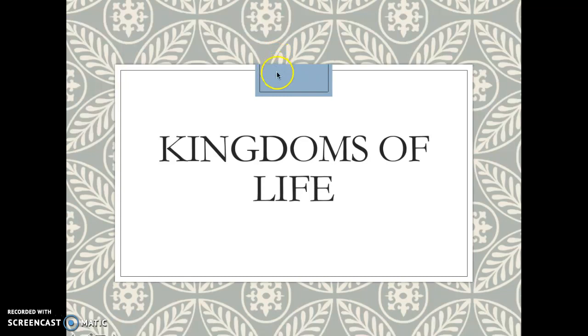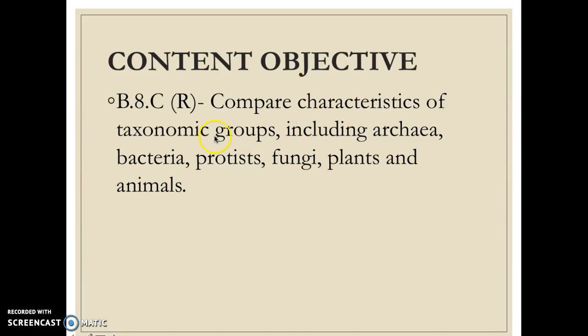The objective for this specific unit is to be able to compare characteristics of taxonomic groups, including archaea, bacteria, protists, fungi, plants, and animals. So those are the six different kingdoms that we're going to be talking about.